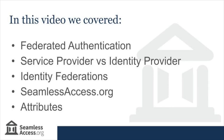To summarise, in this video we covered federated authentication, which is a technology used to authenticate access to external resources. We distinguished between service providers, such as publishers, and identity providers, such as research and education institutions. We identified the role that identity federations play in linking service providers and identity providers. We explained how SeamlessAccess makes federated authentication more seamless by allowing service providers to determine a user's preferred identity provider without the additional friction of asking the user. And we introduced the concept of user attributes as a means of preserving privacy.